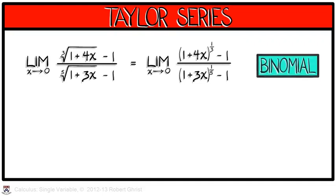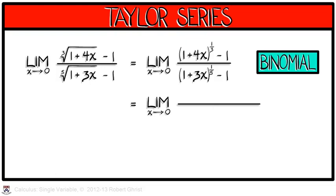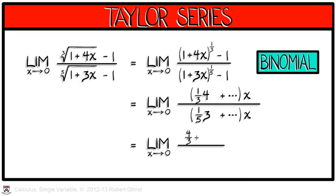Well, rewriting this a little bit allows us to use the binomial series with alpha equal 1 third in the numerator and 1 fifth in the denominator. Applying that gives us 1 plus 1 third times 4x plus higher order terms. Subtract 1. In the denominator, 1 plus 1 fifth times 3x plus higher order terms. Subtract 1. Those subtractions get rid of the constant terms, we're left with terms that all have an x in them. We factor that out, and then the leading order terms are 4 thirds in the numerator and 3 fifths in the denominator, yielding an answer of 20 ninths. That is beautiful.